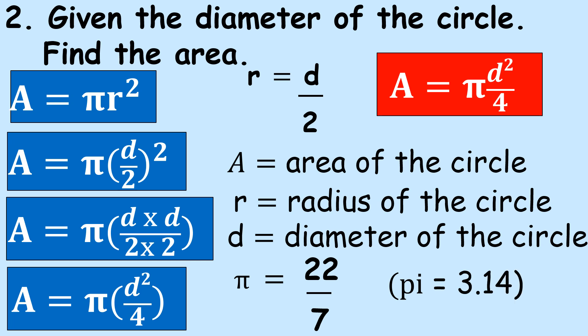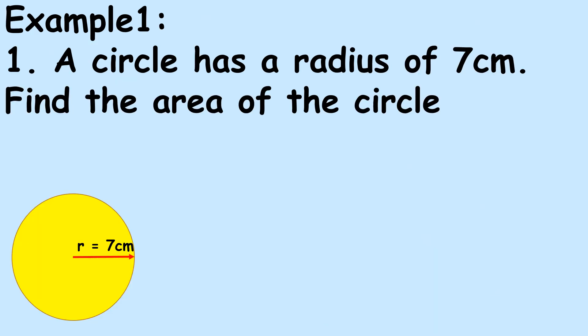Remember: A is the area of the circle, r is the radius, d is the diameter of the circle, and pi is a constant which is 22 over 7 or can be used as 3.14.